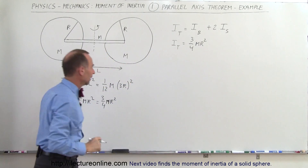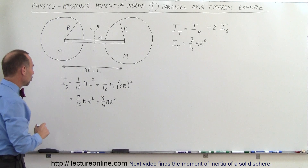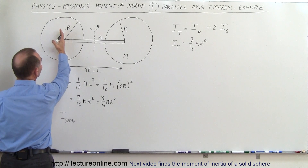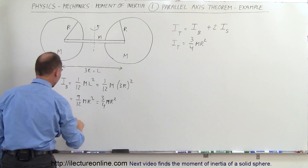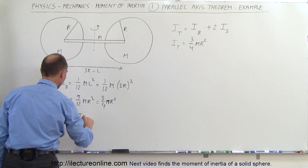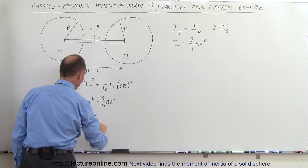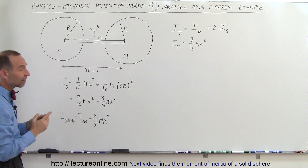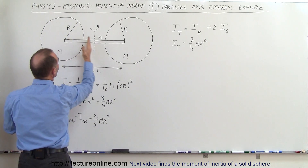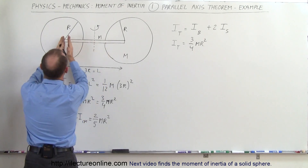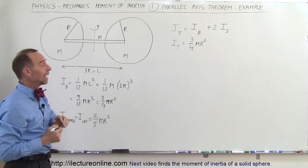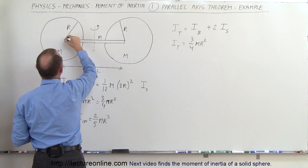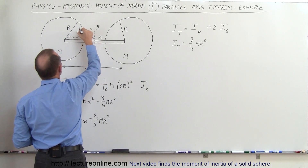Now, what about the moment of inertia of the spheres? Normally the moment of inertia of a sphere rotating about its center of mass is I_cm = (2/5) mr². But notice that the sphere is not rotating about its own axis — it has been displaced from that location. So we use the parallel axis theorem. The moment of inertia of the sphere as set up here accounts for a displacement distance d.